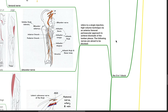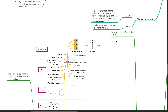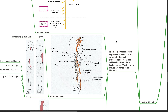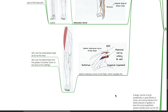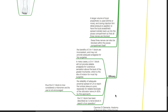The three-in-one block. This is a term coined by Winnie in 1973. It refers to a single-injection high-volume technique via an anterior femoral perivascular approach to achieve blockade of the lumbar plexus. The nerves aimed to be blocked are: the femoral nerve; the obturator nerve, which originates from the lumbar sacral plexus L2 to L4 and supplies the adductor muscles of the hip, part of the hip joint, skin on the medial side of the thigh and part of the knee joint; and the lateral cutaneous nerve of the thigh, which supplies skin over the anterolateral aspect of the thigh. A larger volume of local anesthetic — 30 mL or more — is used, and during injection, firm distal pressure is applied to have the local anesthetic spread rostrally into the psoas compartment so that all three nerves are blocked.